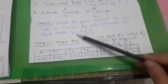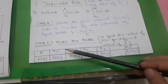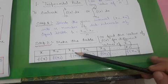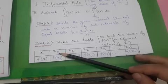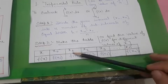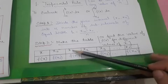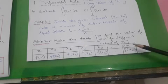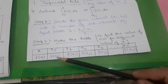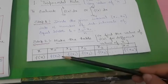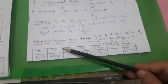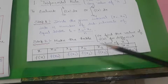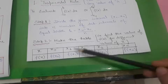In step two, you find the x values starting from the lower limit and adding the equal width h to get each next value, up to xn at the upper limit. Then, for each x value — x0, x1, x2, and so on up to xn — you compute the corresponding function value. These function values are what you will use in the formula.